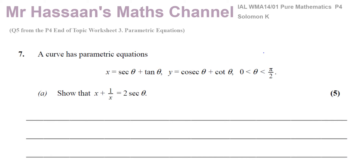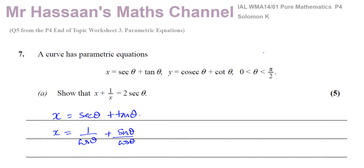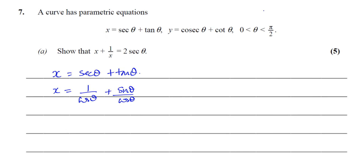What we can do is something quite simple, actually. I know that x equals sec θ plus tan θ. The way I would do this is to rewrite these in a form I'm comfortable with — I'll write them as their reciprocal functions. So sec θ is one over cos θ, and tan θ is sin θ over cos θ. I'm going to write things in terms of sin and cos θ, and then that might help me.